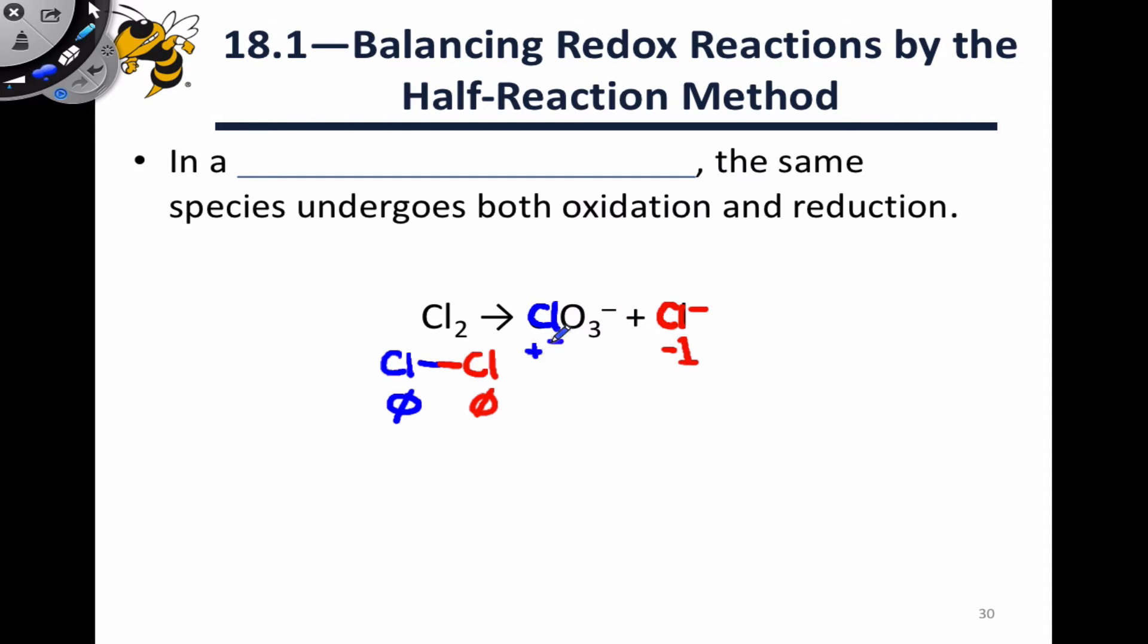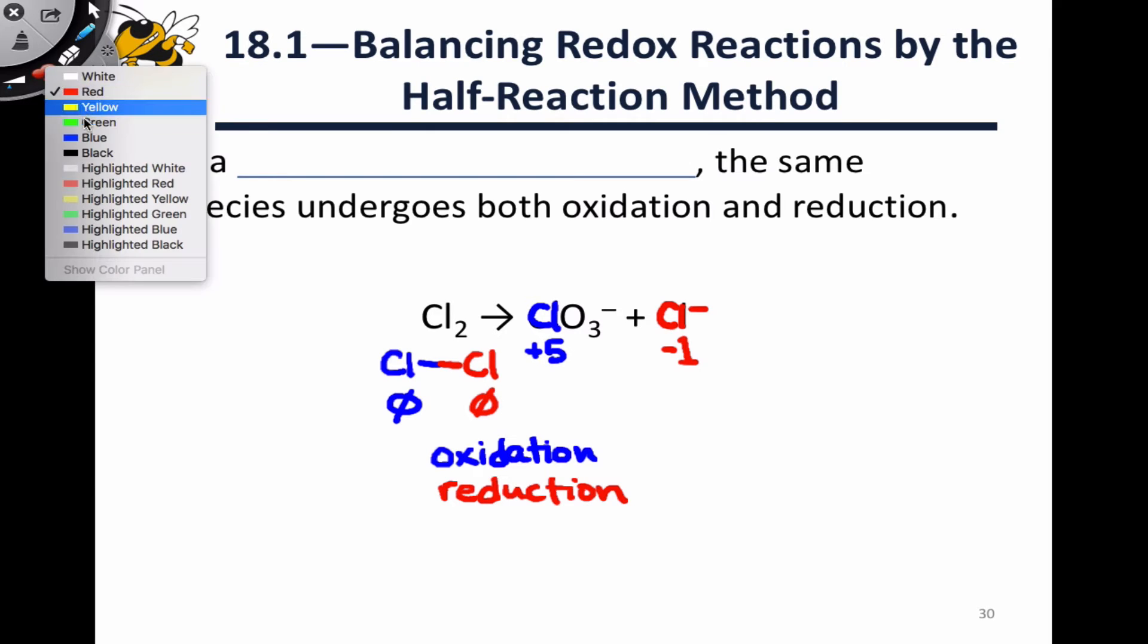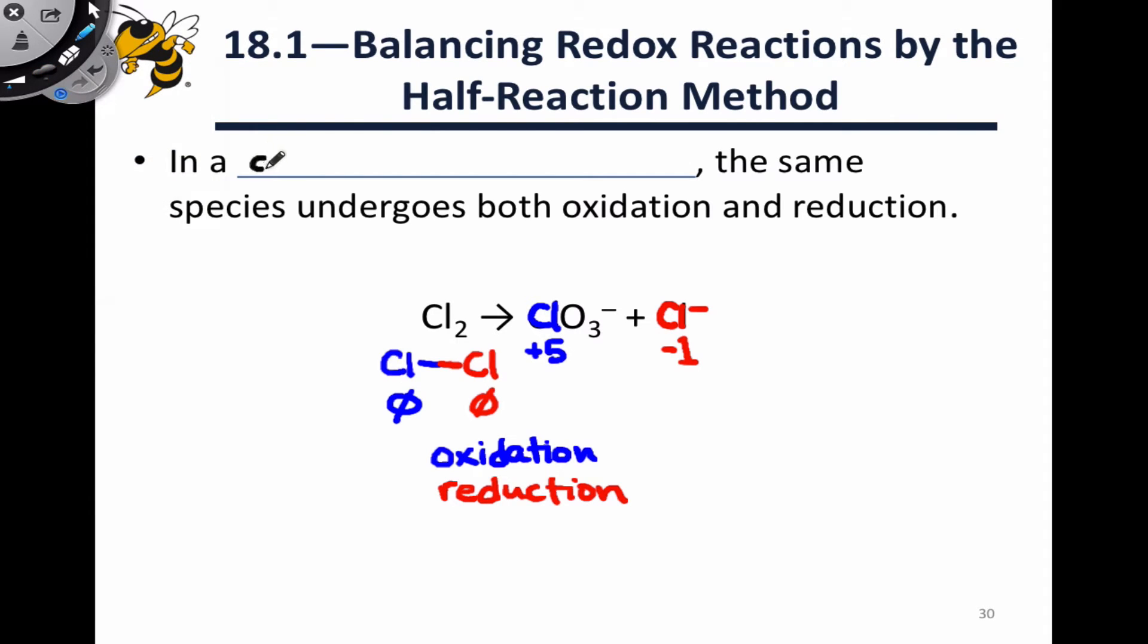And so chlorine here must have an oxidation state of plus five. So the blue chlorine here has undergone oxidation, while the red chlorine has undergone reduction. This type of reaction in which a single species undergoes both oxidation and reduction is known as disproportionation.